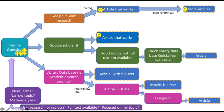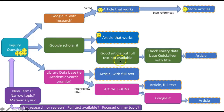Remember, when I say 'an article that works,' I mean it's a research article with methods and results, the full text is available on the internet, and it's focused on your topic. If you're not finding anything through Google and Google Scholar, you may want to change your search terms. If you're finding too much, you may want to narrow your topic. And after finding your three research articles, run through these steps again to find your meta-analysis. Another possibility is that Google Scholar gives you a great article but you can't find the full text — no worries. Just copy the title and look for it in our library database using the Quicksilver fast search.